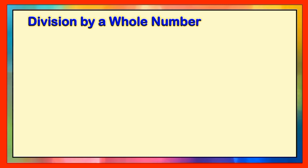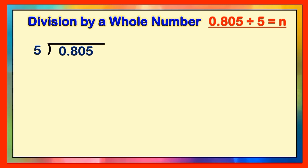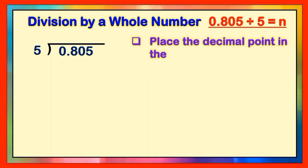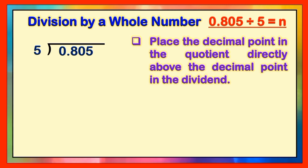Let us begin our discussion on division by a whole number. Let's have this division number sentence of 0 and 805 thousandths divided by 5 is equal to n. Here's another way of writing this division number sentence. Then, let's start with the first step in dividing a decimal by a whole number: place the decimal point in the quotient directly above the decimal point in the dividend, like this.